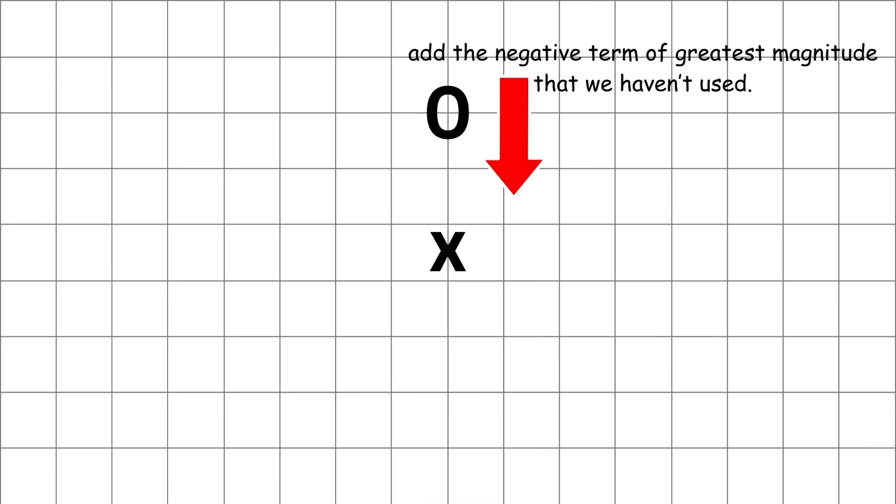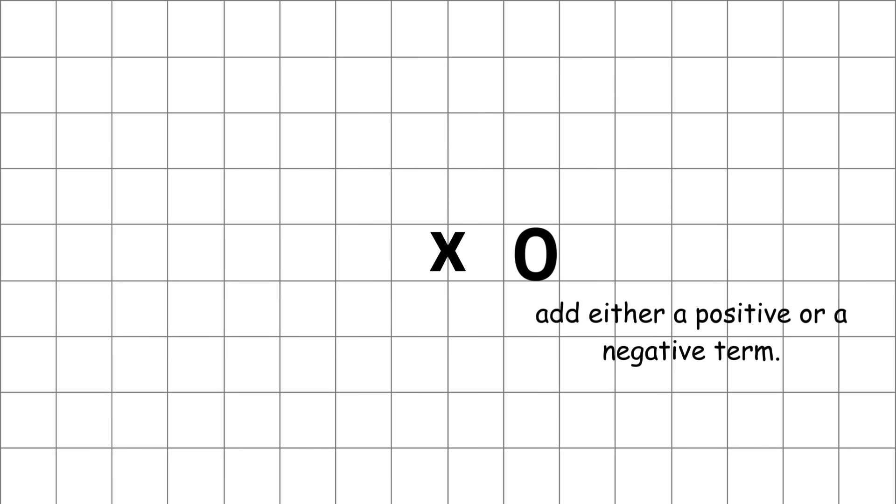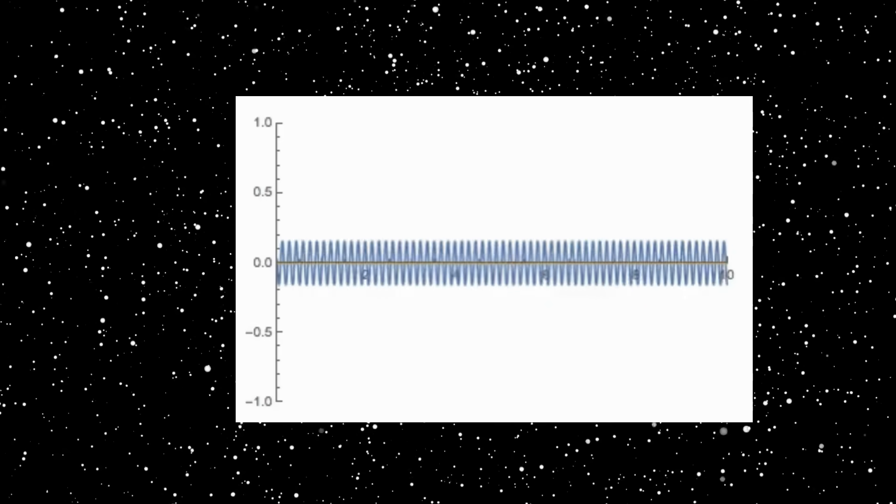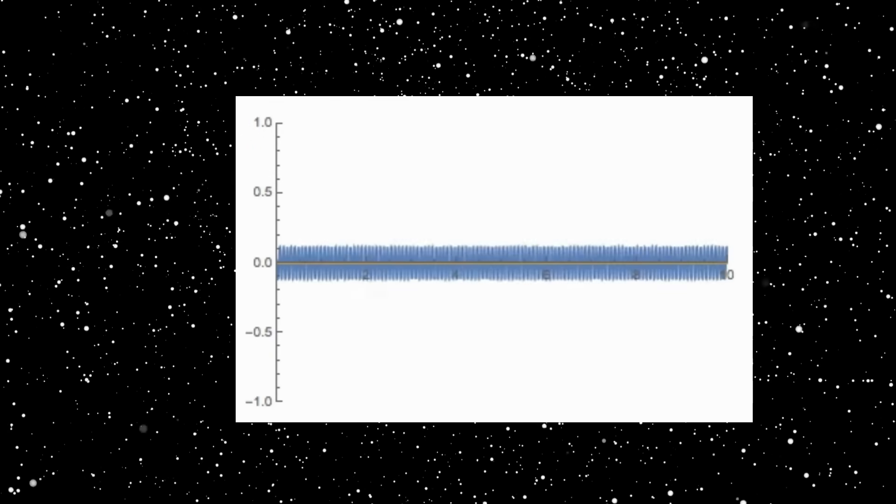In order to test this out, let's pick any real number X and try to get to it by adding our terms. We start at zero. If X is above us, we add the largest positive term we haven't used. If X is below us, we add the negative term of greatest magnitude that we haven't used. If we are currently at X, we can add either a positive or a negative term. We can repeat this process indefinitely, going as far up or down as we need, and gradually converging on X as our terms get smaller and smaller.